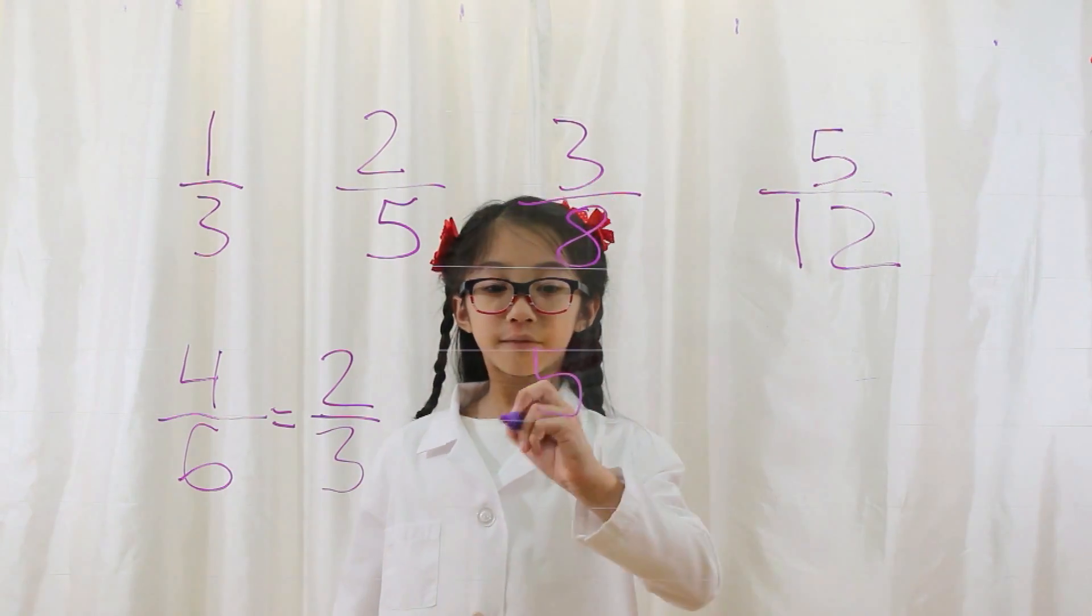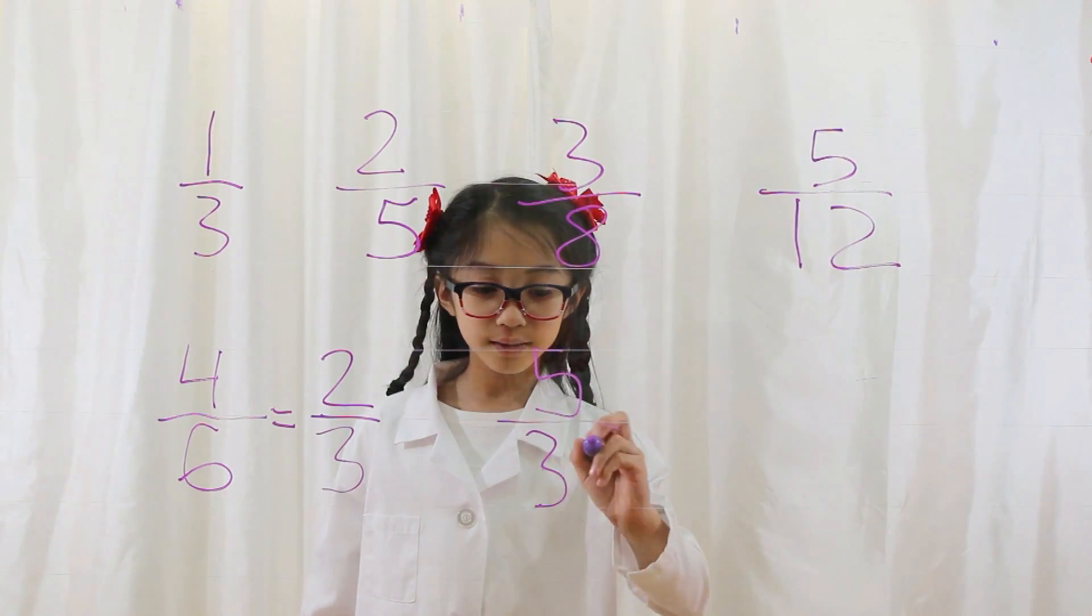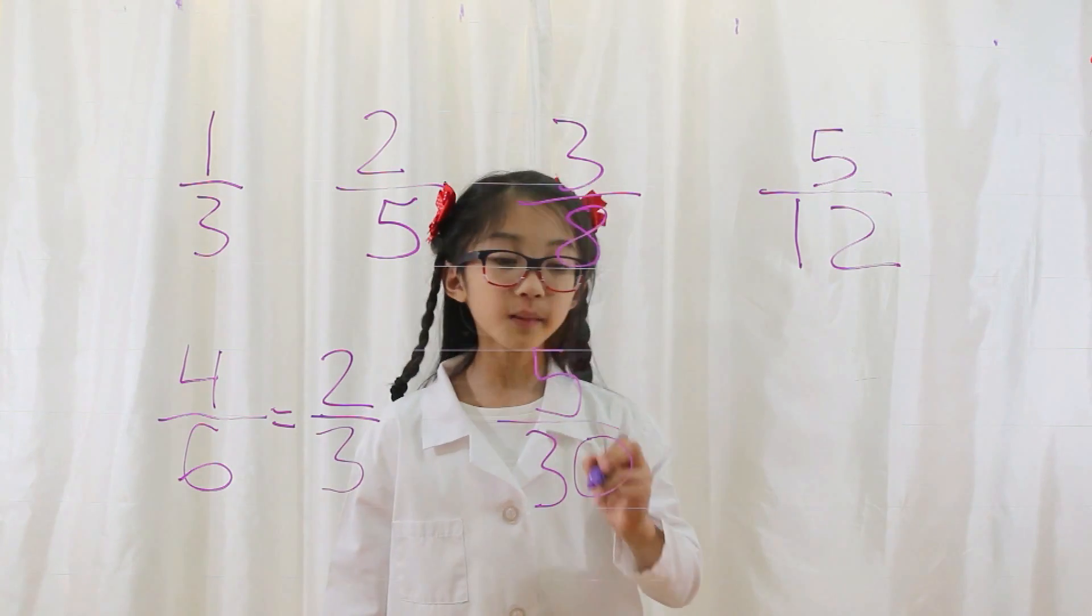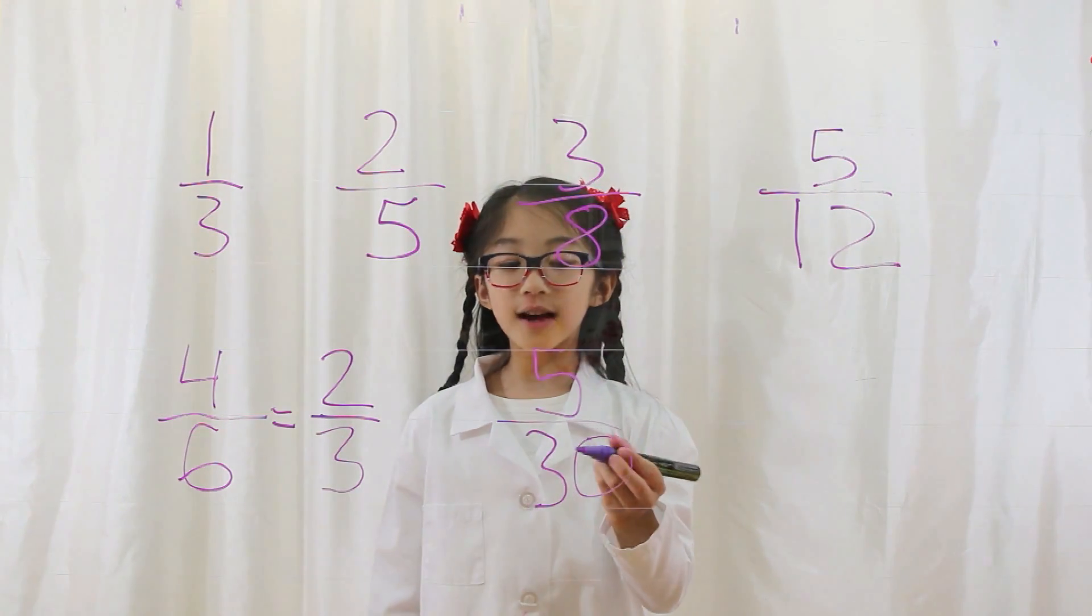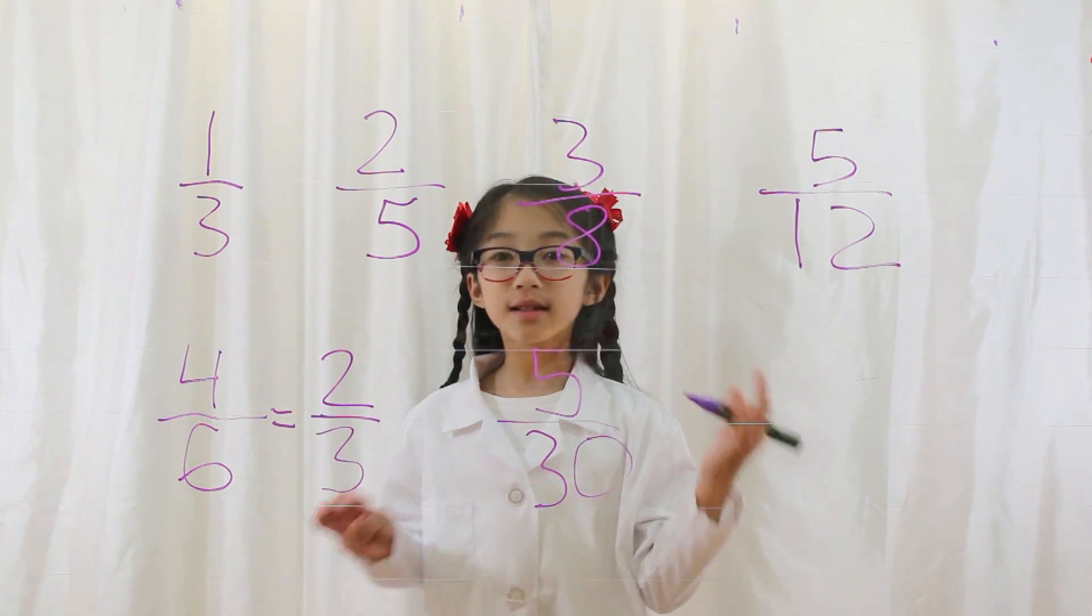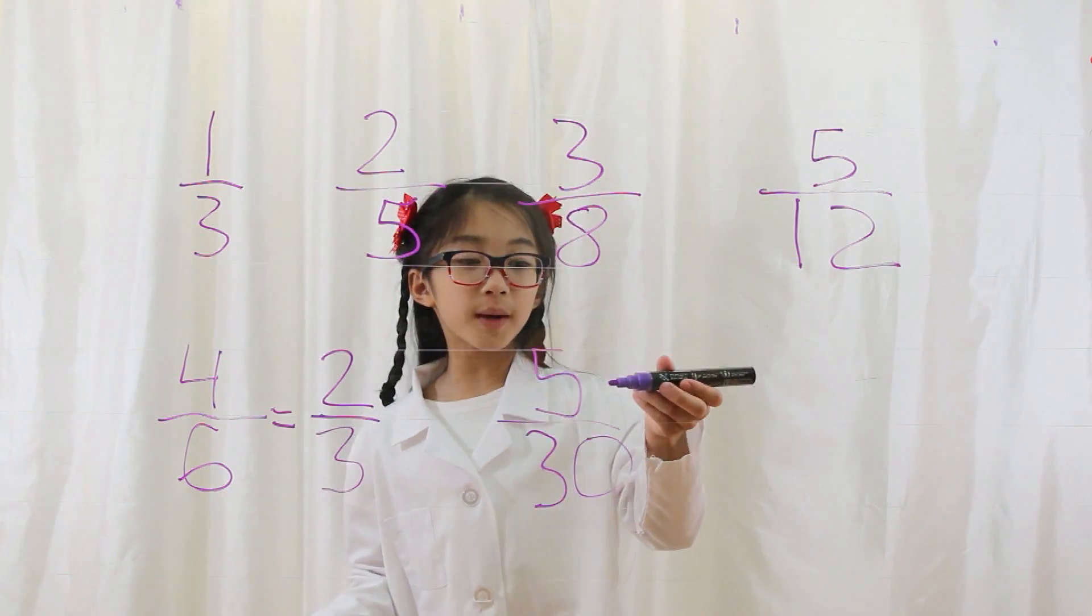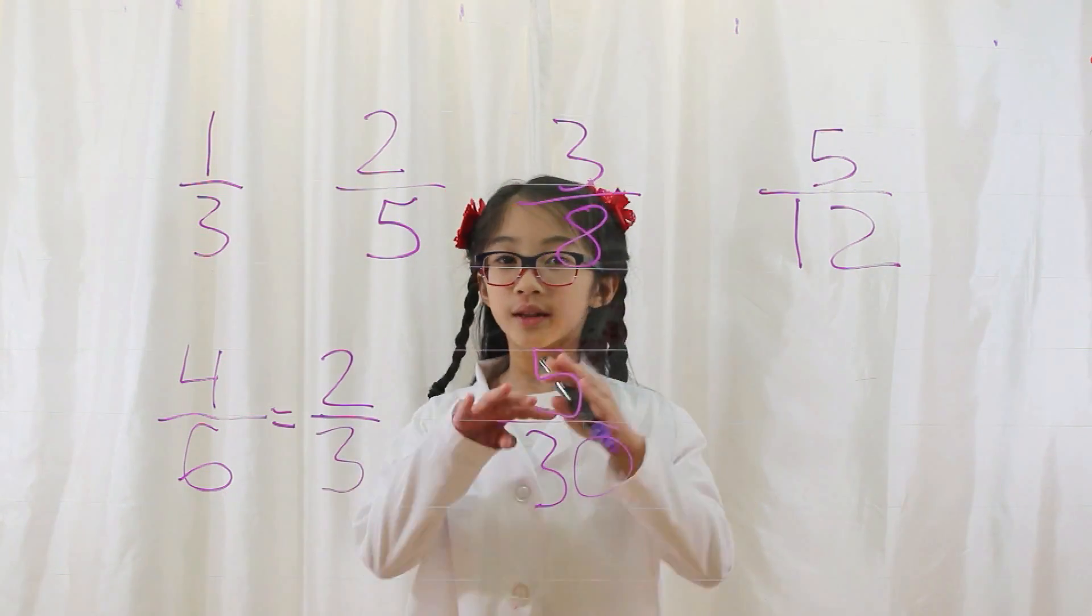Now, let's say you have five-thirtieths. To simplify this fraction, you must find the greatest common factor that can divide both the numerator and the denominator with no remainders.